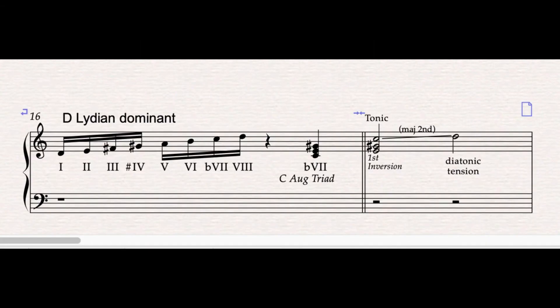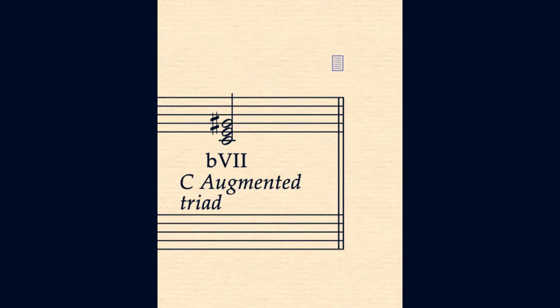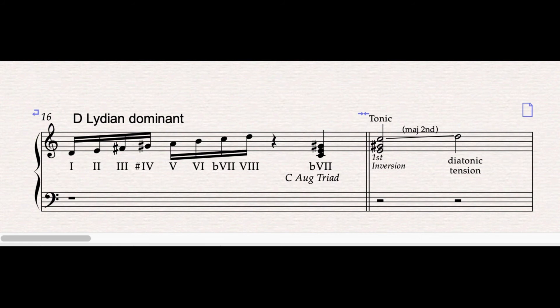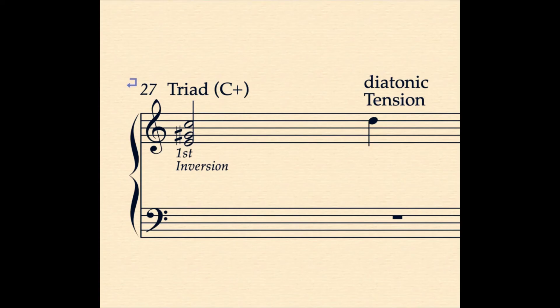This motive or motival shape is built around the C augmented triad. The C augmented triad can be derived from the D Lydian dominant scale. The motive features the triad in its first inversion and one diatonic tension. Thank you.